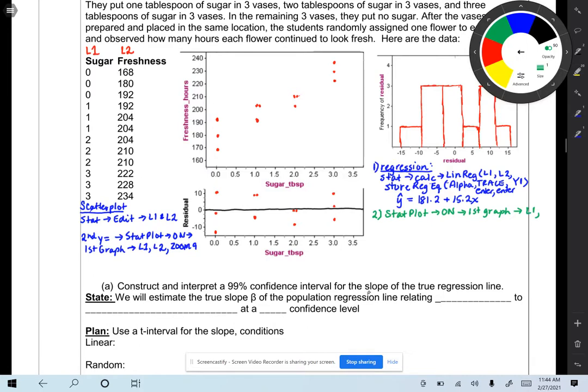or for your second one, you're going to choose the residual. So to choose the residual, this is important. Select second, and then stat, and that'll pull up the list menu. In the list menu, you're going to choose RESID, residual, and it'll put it in that spot.